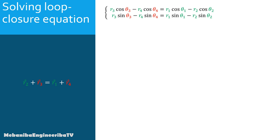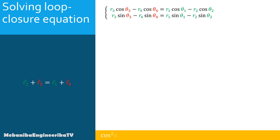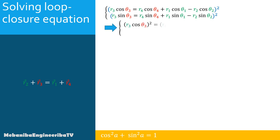The solving procedure will be different from solving classical linear equations. Here we need to cancel one unknown using trigonometric identities. Mainly, we will use the fact that for any angle A, cos²A + sin²A = 1. Thus, in a first step, we send R4·cos θ4 and R4·sin θ4 to the right sides of the two equations. Now we have only θ3 on the left side. In order to make cos²θ3 and sin²θ3 appear, we raise the two equations to the power of 2.